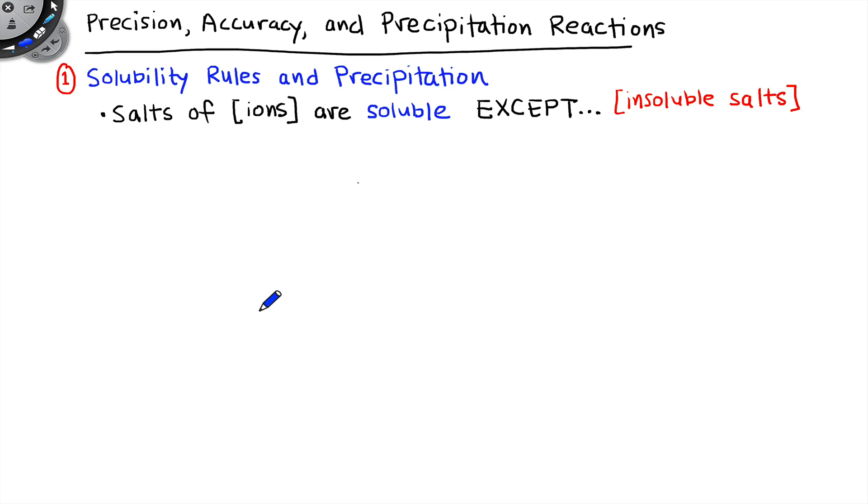The other type of solubility rule flips the script essentially, and we say that salts of a certain class of ions are insoluble, except for certain examples of salts containing those ions that are soluble. So maybe I have salts of a particular anion are insoluble, with the exception of when that anion is paired with a particular set of cations, and those salts turn out to be soluble.